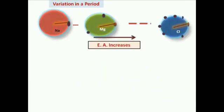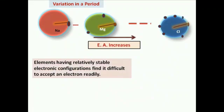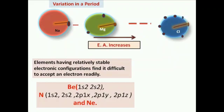Looking at the trend in a periodic table: if we move from left to right in a period, electron affinity increases. However, elements having relatively stable electronic configurations find it difficult to accept electrons readily. So beryllium, with outer electronic configuration 2s², nitrogen with half-filled p orbitals, and neon with completely filled p orbitals, have zero electron affinity — energy must be supplied to add electrons to these atoms.